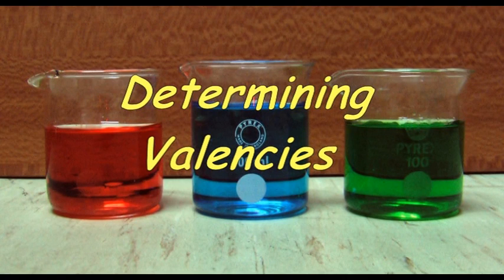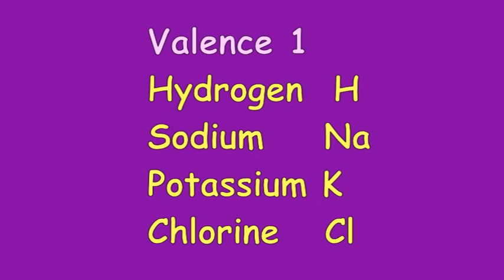One early method for determining element valences was to find the number of valence-1 atoms that they combine with. Famous valence-1 elements include hydrogen, sodium, potassium, and chlorine.